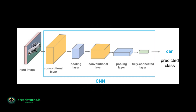The filters slide over the input data, analyzing small regions at a time, and outputting a set of feature maps. These feature maps are then passed through the next layer of neurons, called the pooling layer, which reduces the resolution of the feature maps, making the network more robust to small changes in the input data.